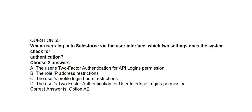Question number fifty-five. When users log into Salesforce via the user interface, which two settings does the system check for authentication? Option A: The user's two-factor authentication for API logins permission. Option B: The role IP address restrictions. Option C: The user's profile login hour restrictions. Option D: The user's two-factor authentication for user interface login permission. Correct answer is Option A and Option B.